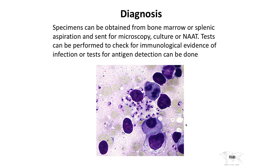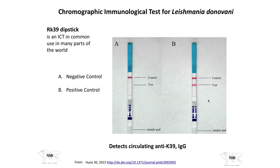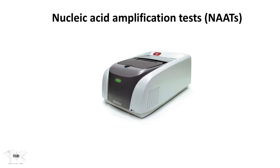Here we have a beautiful picture of specimens under the microscope where you can see the parasites. Here is a positive culture — some labs have this ability, though it takes a minimum of a few days. And the RK39, which is a great test, is very easy to do — you use it to detect circulating antigen. Of course, nucleic acid amplification testing is also changing many of our diagnostics.